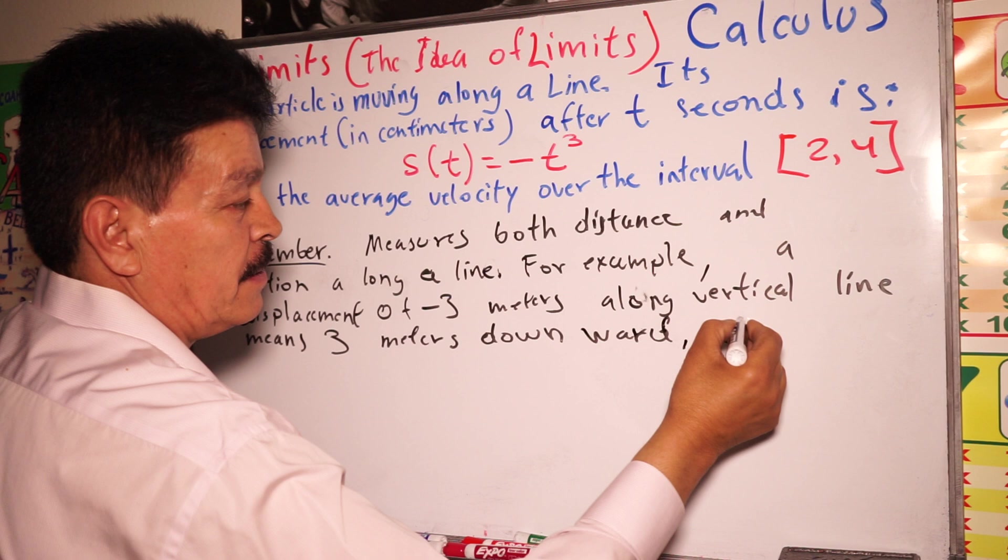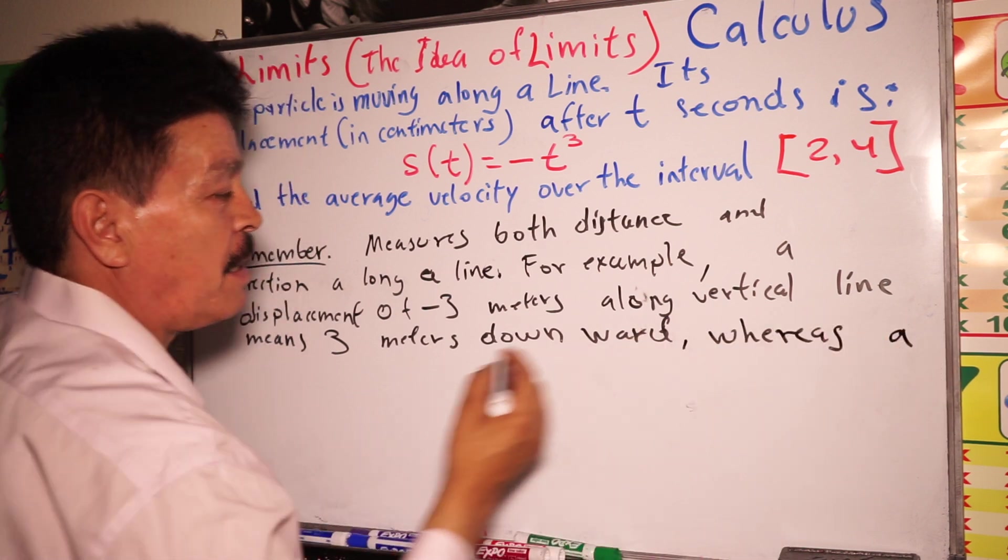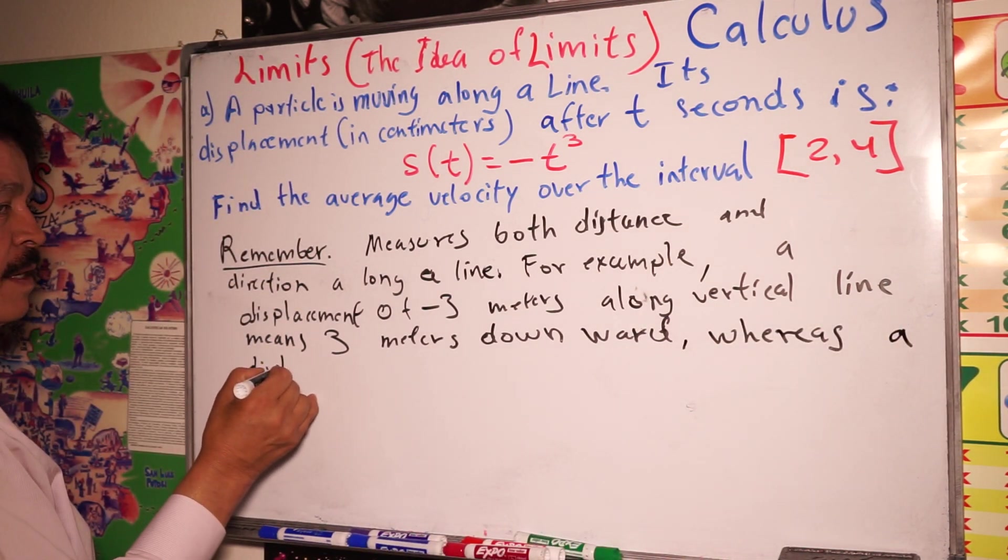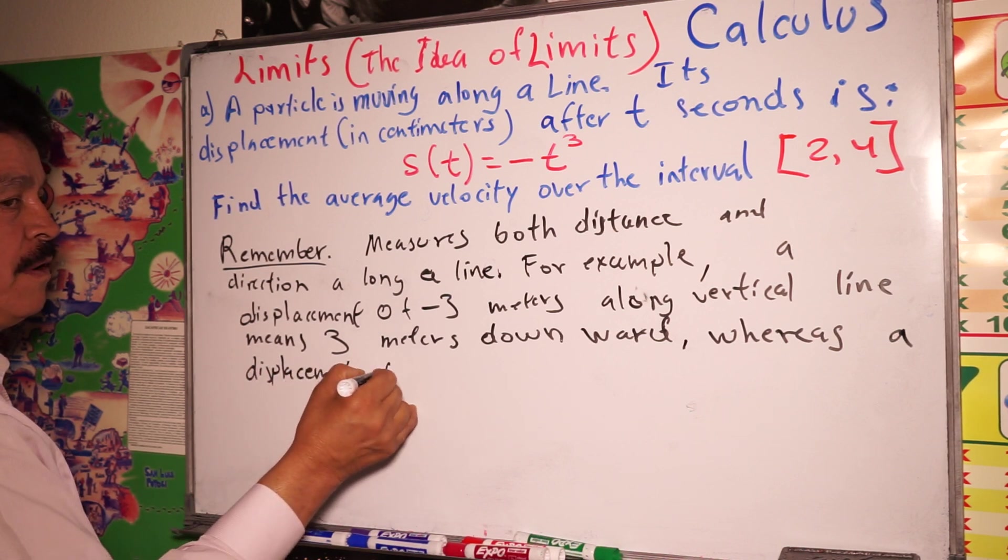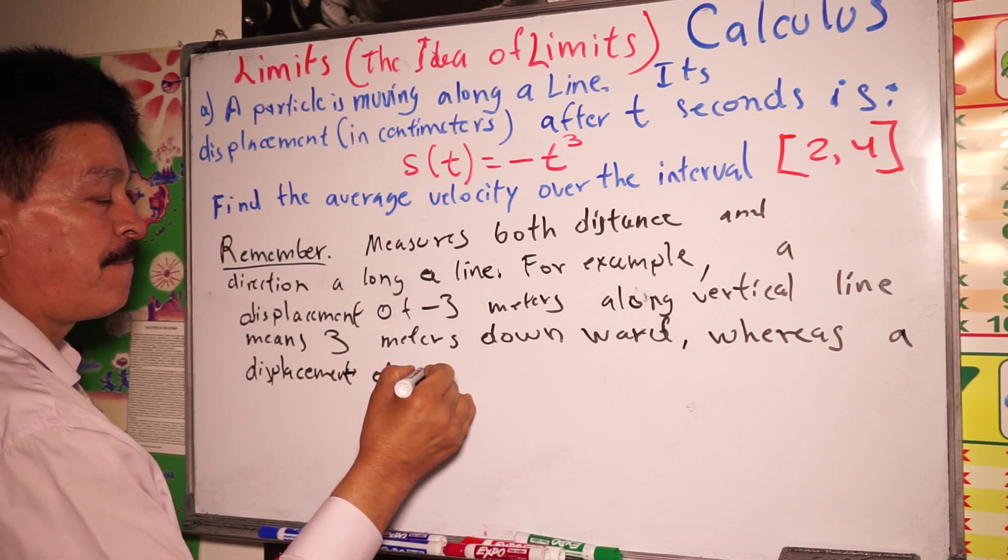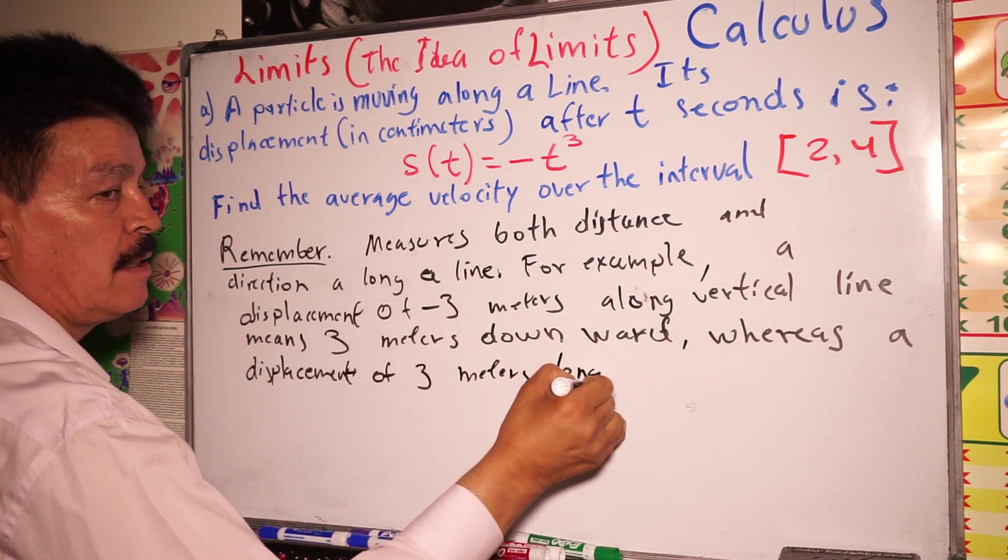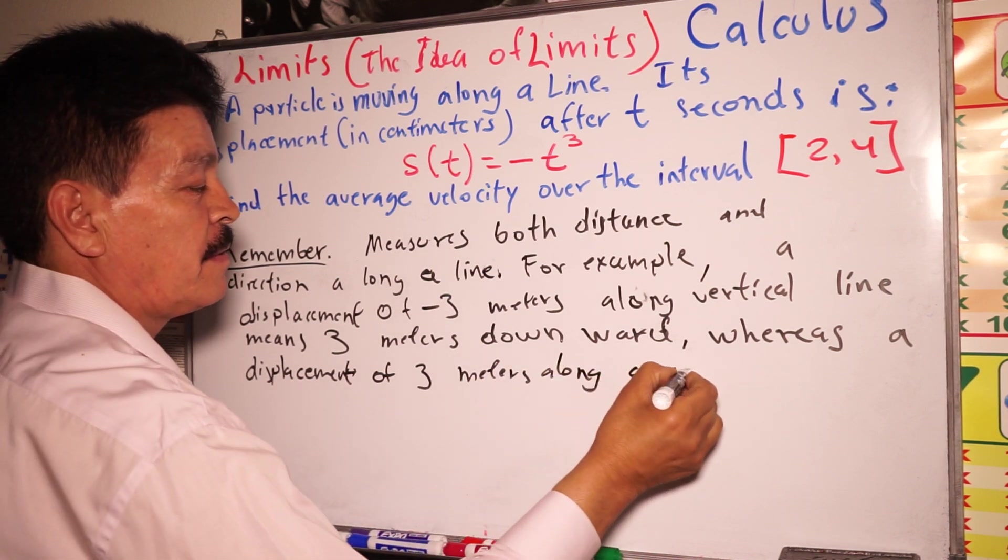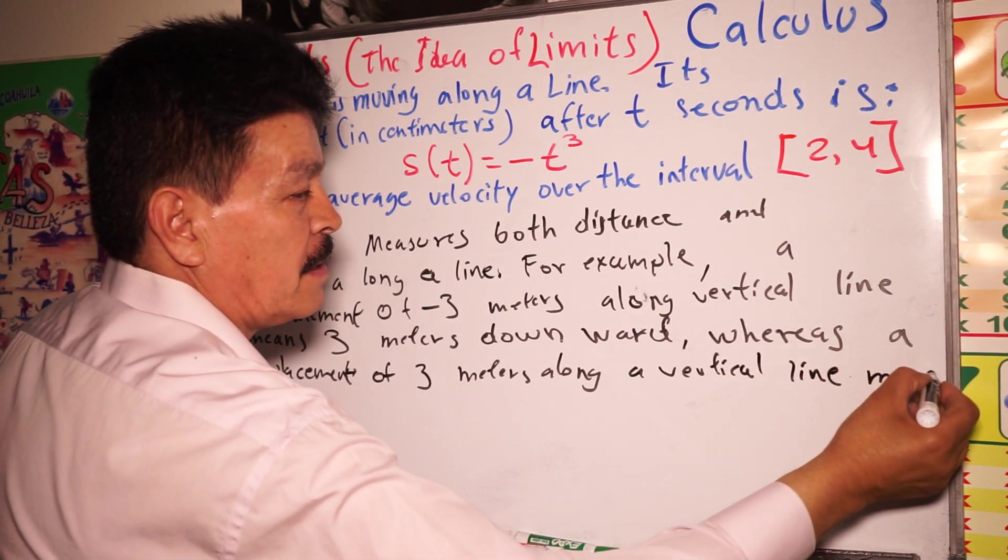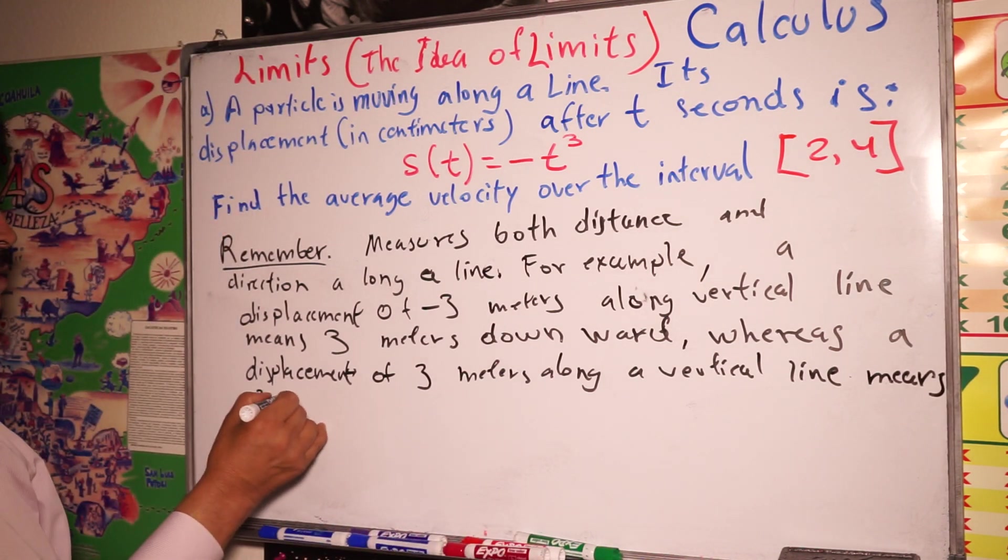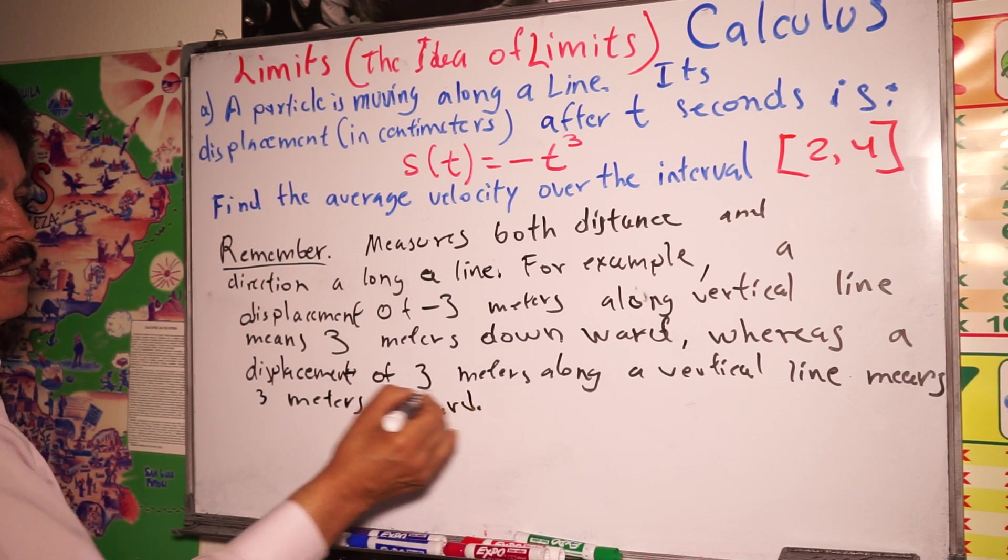Whereas a displacement of three meters along vertical line means three meters upward.